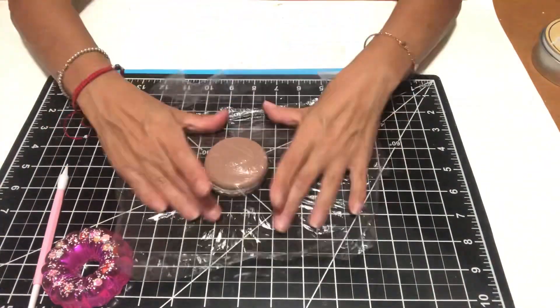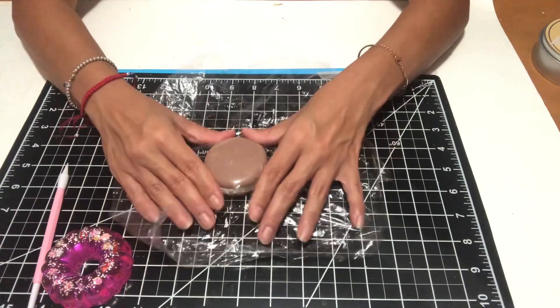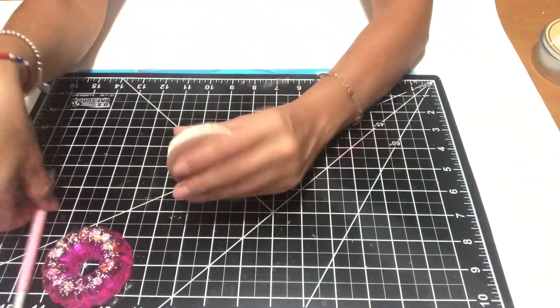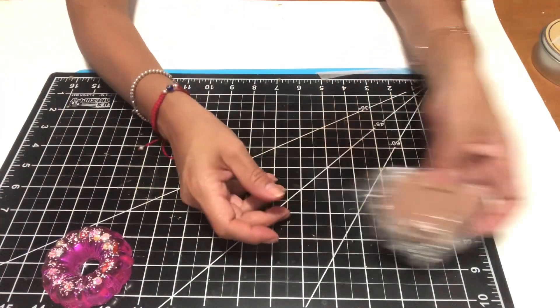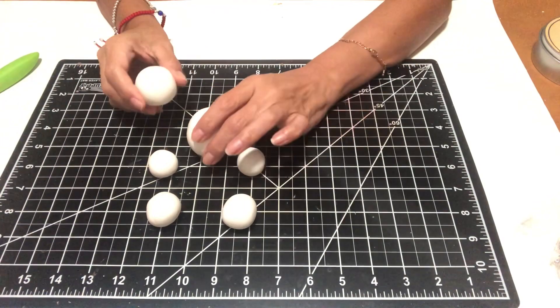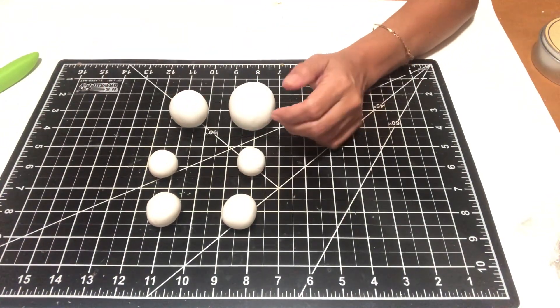I'm wrapping it in saran wrap because I want it to be soft. So when I add my snowman, I don't need to worry about adding glue to it and keeping them both soft. This will help that process without me having to worry about the glue.